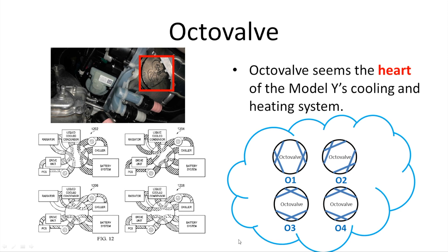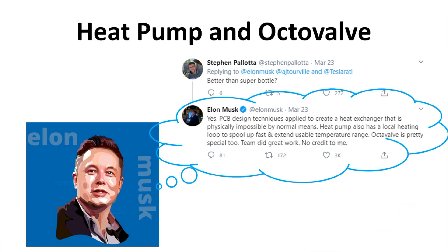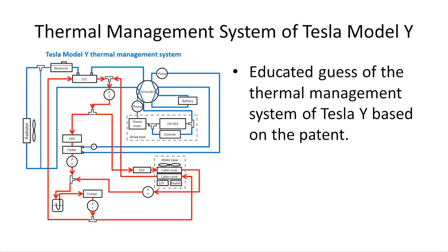With all this information, it is just a matter of time and effort to link all the components together and solve this big puzzle. Elon Musk has mentioned the octa valve in a previous tweet while responding to a Tesla community member who inquired if the Model Y had a solution better than a super model. Musk confirmed and noted that the octa valve is pretty special.